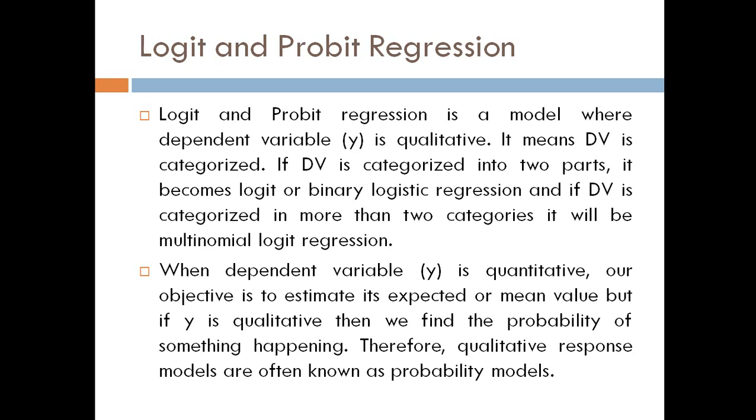When the dependent variable is quantitative, our objective is generally to estimate its expected or mean value. But if the dependent variable is qualitative, then we find the probability of something happening. Therefore, qualitative response models are often known as probability models.